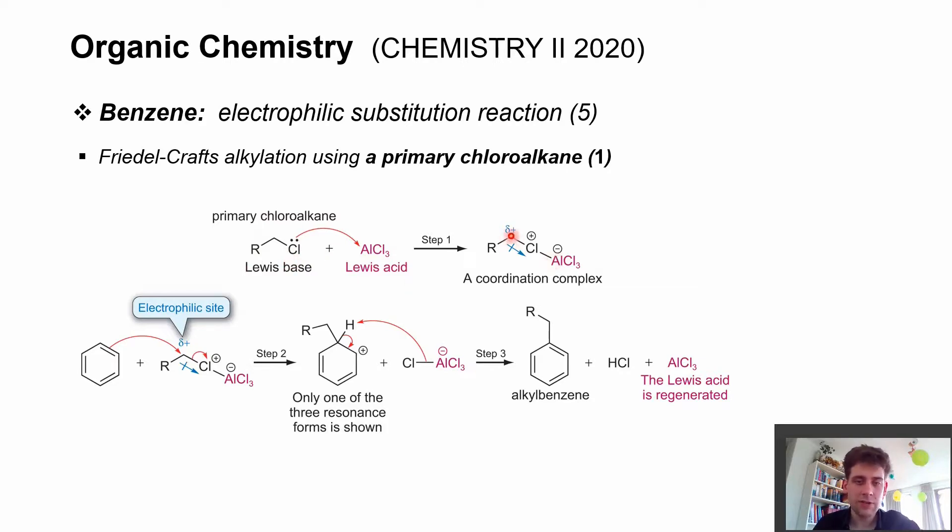The pi electron density attacks at this electrophilic site, and the chlorine atom is eliminated by the strong force of the Lewis acid. We then arrive once again at our intermediary carbocationic state.